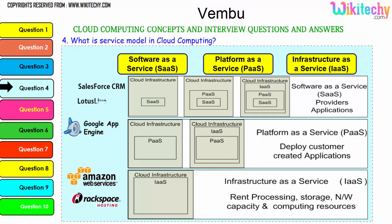For software as a service, cloud infrastructure software is placed in the operating system and then in the infrastructure. For platform as a service, the platform is given and you can put any application or software you want on it. For infrastructure as a service, the server is given to you and you can put any application you want — only application-level changes can be made with software. Examples: SaaS includes Lotus Live and Salesforce CRM; PaaS includes Windows Azure and Google App Engine; IaaS includes Amazon Web Services and Rackspace hosting.